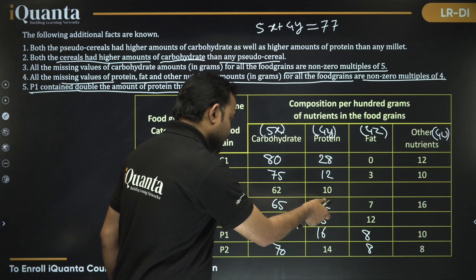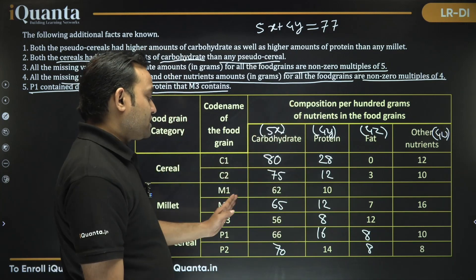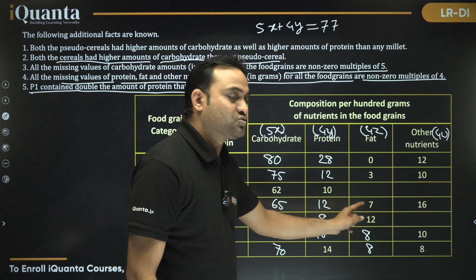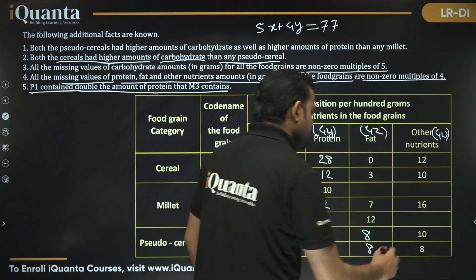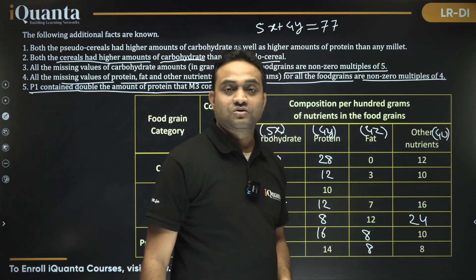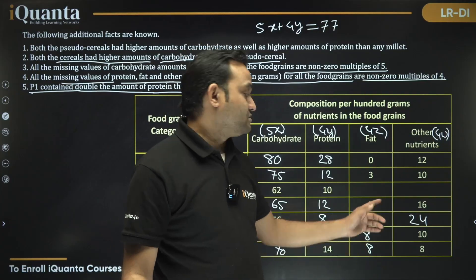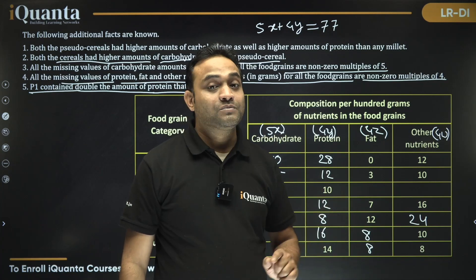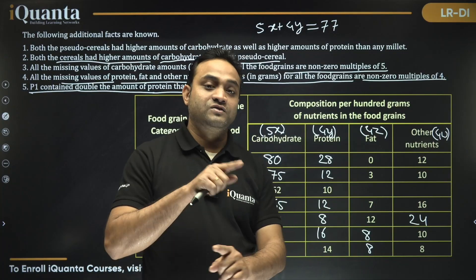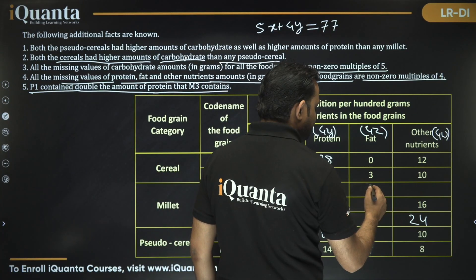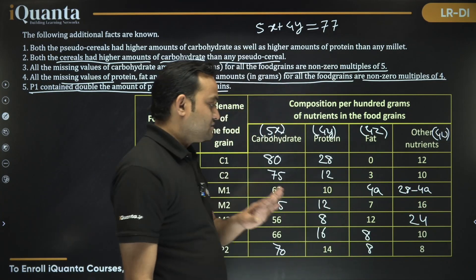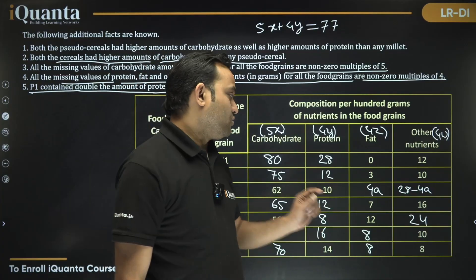For the remaining M2 values: carbs = 62, protein = 10 are known; sum = 72, so fat + other nutrients = 28. Both must be multiples of 4, but there's no additional constraint — it could be 4+24, 8+20, 12+16, etc. So we express fat as 4a and other nutrients as 28 minus 4a. These exact values cannot be determined uniquely.